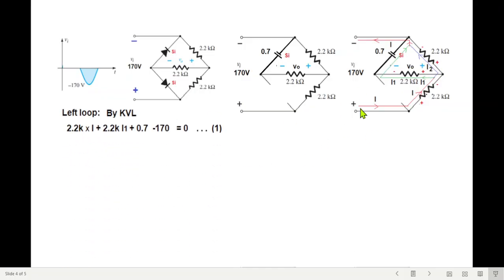So left loop from here, this. 2.2 into I. 2.2K into I1. And 2.2K into I1. Then positive 0.7. And coming here, negative 170 equal to 0. Equation number 1. Equation number 2, 2.2I and 2.2I2. And coming here, negative 170.